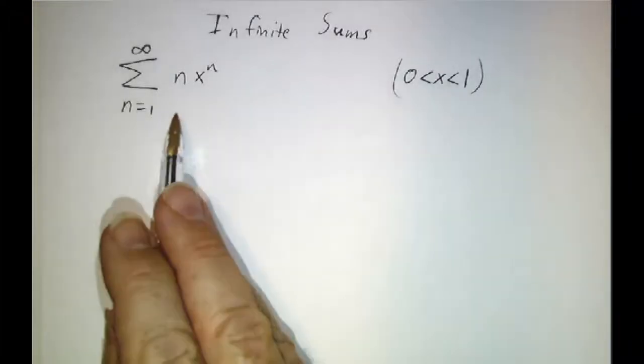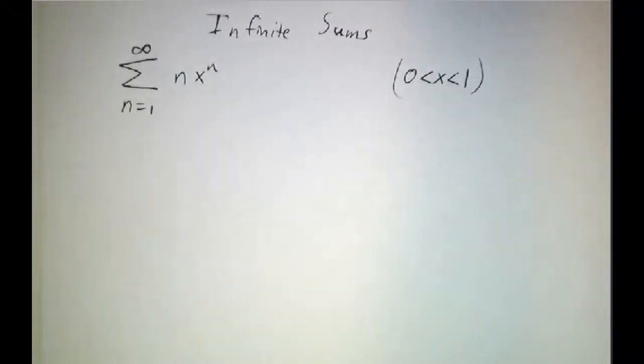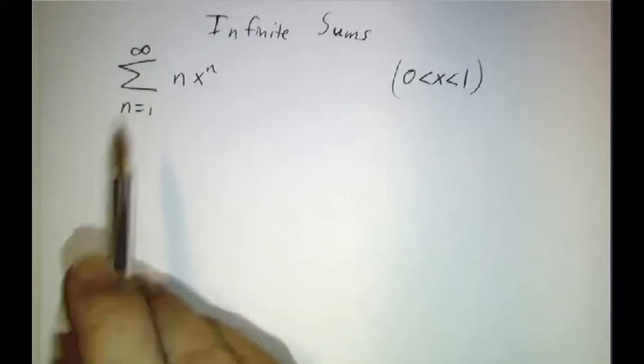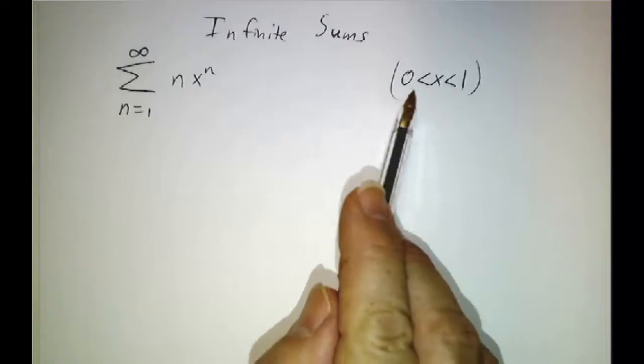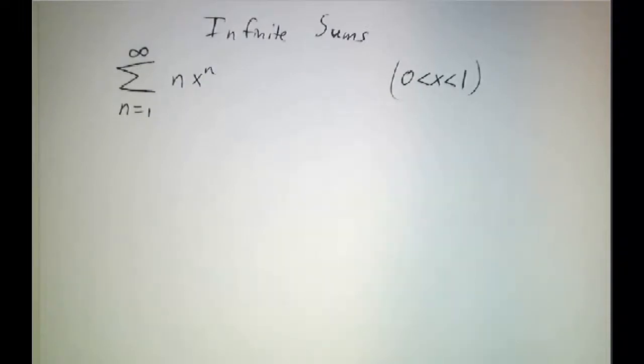Okay, this is an example of the kind of infinite sum that would come up in probability. We want to do the sum as n goes from 1 to infinity of n times x to the n, where x is some number between 0 and 1.